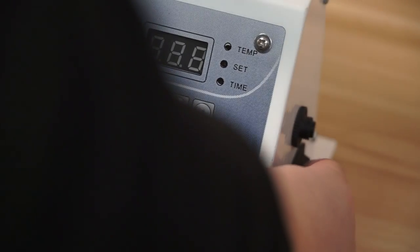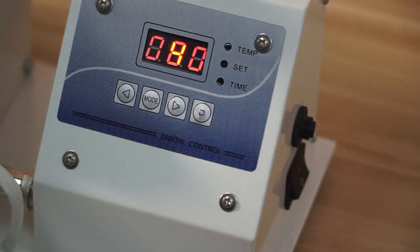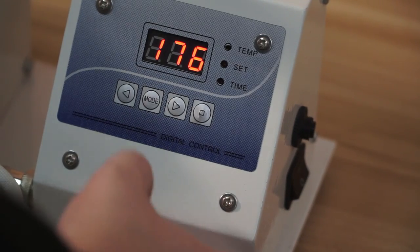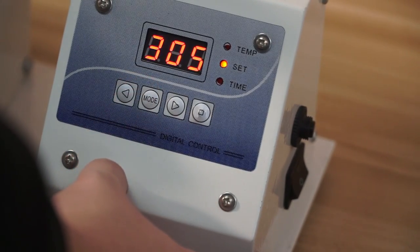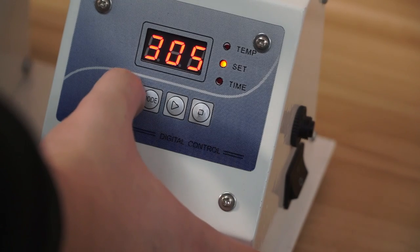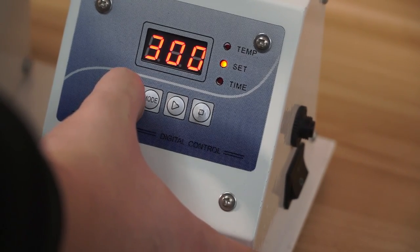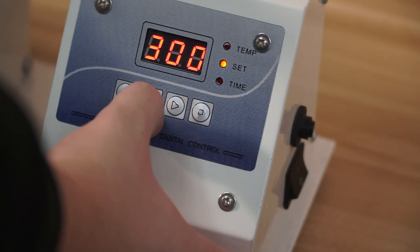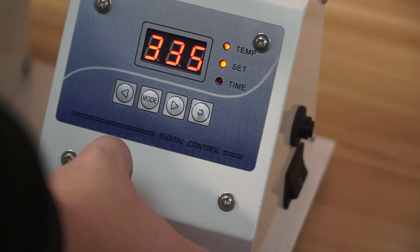First of all, turn on the mug press and then set the printing temperature. One should be 300 Fahrenheit degrees and the other one should be 330 Fahrenheit degrees.